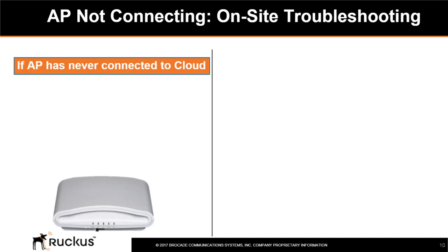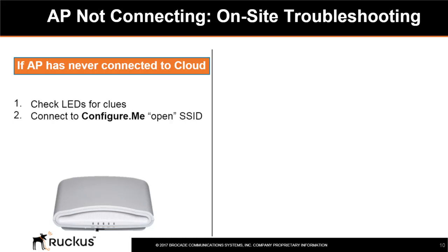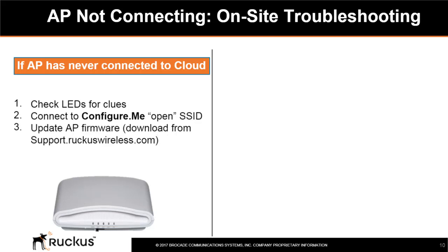There are two ways to troubleshoot if the AP is not connecting. The first way is if the AP has never connected to the cloud: check the LEDs for clues, connect to the 'Configure.me' open SSID, update the AP firmware if it's an older version — firmware can be downloaded from support.ruckuswireless.com. Also double-check the serial number of the AP in the cloud portal. A mobile app is available where you can scan the serial number on one or multiple APs and add all serial numbers at the same time.